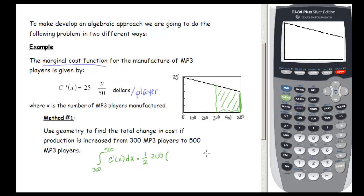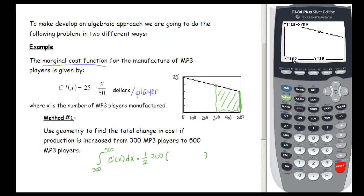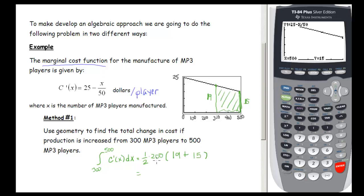The base is 200. We need the heights at x equals 300 and x equals 500. Using the calculator with trace, at x equals 300 the y value is 19, and at x equals 500 the y value is 15. So we have one half times 200, which is 100, times 19 plus 15, which is 34, giving us 3400 dollars.